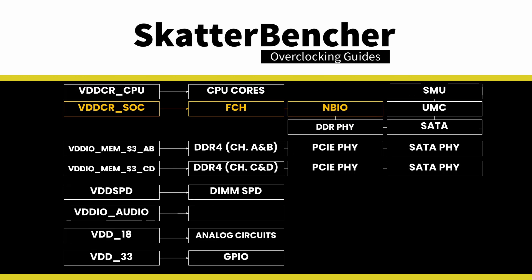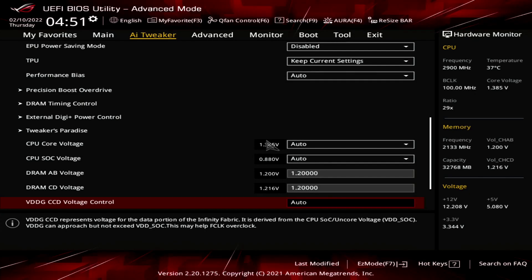The voltage for the fabric is provided by the VDDCR SoC voltage rail, which also powers the memory controllers. While there's only one incoming voltage rail to the I/O die, AMD uses DLDOs internally to create additional voltage rails — that's why you'll find options like VDDG for the fabric PHY in the BIOS. Generally speaking, Zen 2 processors can run synchronous mode all the way up to DDR4-3600 with a fabric clock of 1800 MHz.